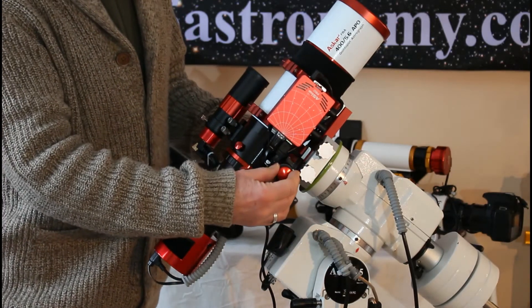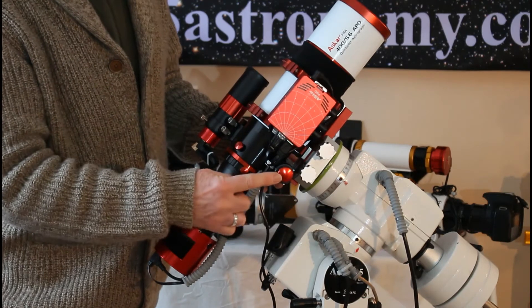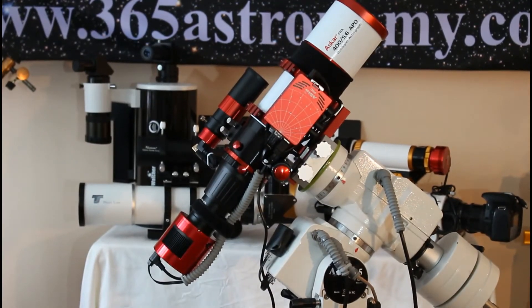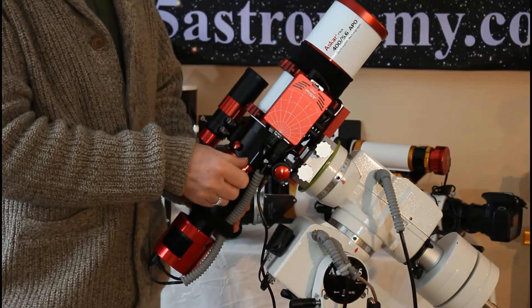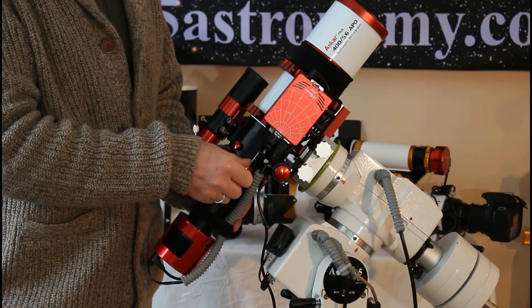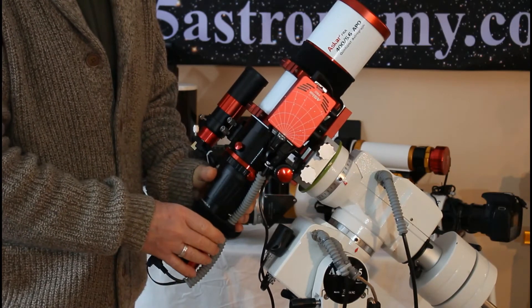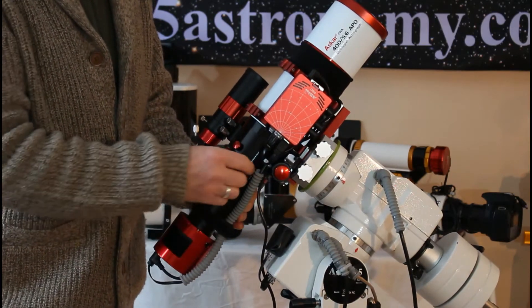The telescope itself has a 10 to 1 reduction drive focus unit here, and the whole camera and focus unit can be rotated on the end of the telescope and clamped in position.